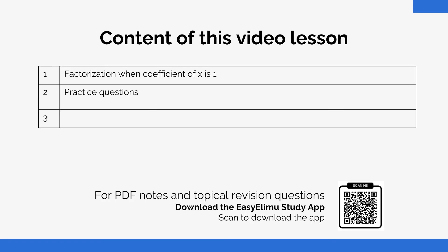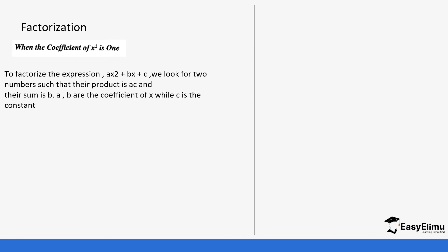In the previous lesson we were able to look at how we expand using different identities. Now we are going to do the opposite — given the equation, how can you factorize it? To factorize an expression of the form ax² + bx + c where the coefficient of x² is 1, we look for two numbers whose product is ac and whose sum is b.